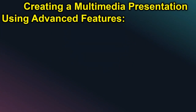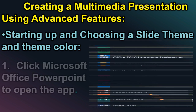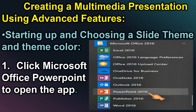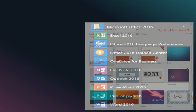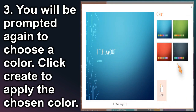Creating a multimedia presentation using advanced features. Starting up and choosing a slide theme and a theme color. First, click Microsoft Office PowerPoint to open the app. Second, as the app opens, you will be prompted to choose a theme. Click your desired theme. Third, you will be prompted again to choose a color. Click Create to apply the chosen color.